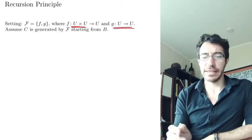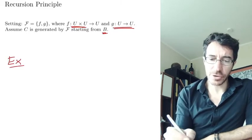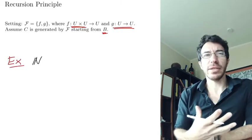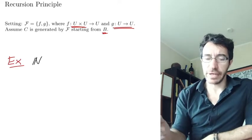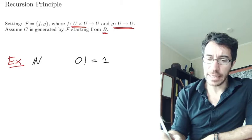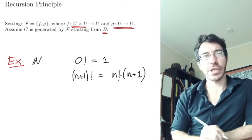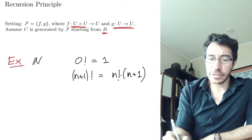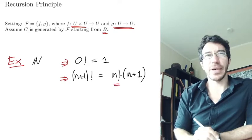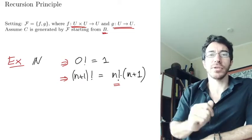The idea is that we want to define functions by recursion. In the example of the natural numbers, what does it mean to define a function by recursion? Consider the factorial function. You say: 0 factorial equals 1, and (n+1) factorial equals n times n factorial, multiplied by n+1. So we define it at 0 first, and then define it at n+1 using the value at n. That's definition by recursion — you use the previous value to define the next value.